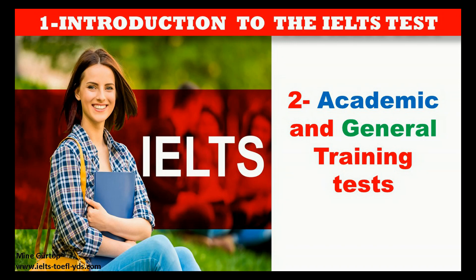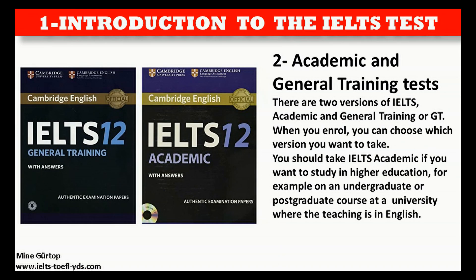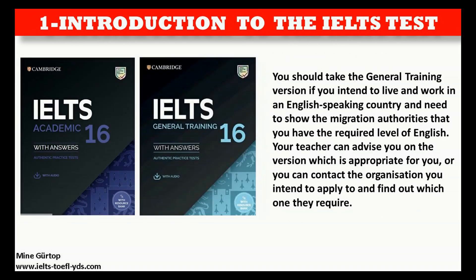There are two versions of IELTS: Academic and General Training, or GT. You should take IELTS Academic if you want to study in higher education — for example, on an undergraduate or postgraduate course at a university where the teaching is in English. You should take the General Training version if you intend to live and work in an English-speaking country and need to show migration authorities that you have the required level of English. Your teacher can advise you on the appropriate version, or you can contact the organisation you intend to apply to.